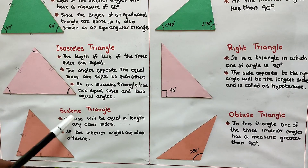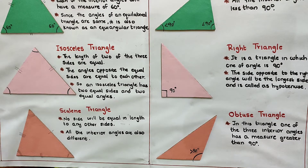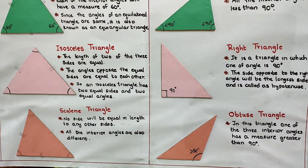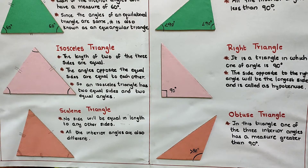The third one is scalene triangle. Here, no side will be equal in length to any other side, and the interior angles are also all different for a scalene triangle. So these are the three types of triangles classified by side: equilateral triangle, isosceles triangle, and scalene triangle.